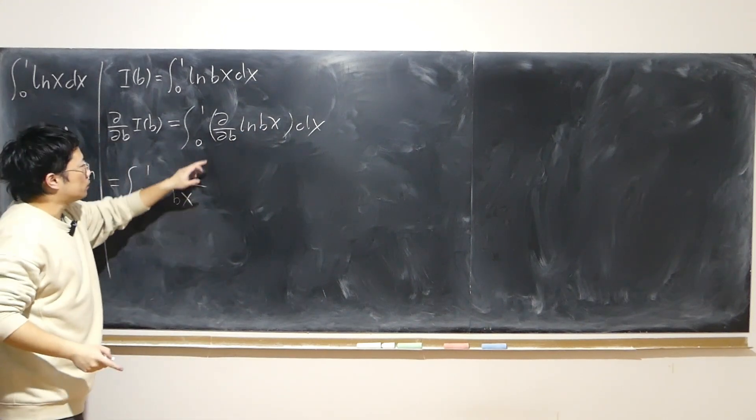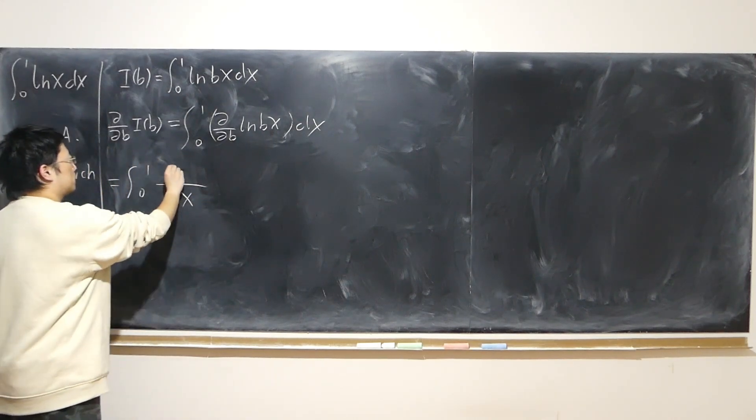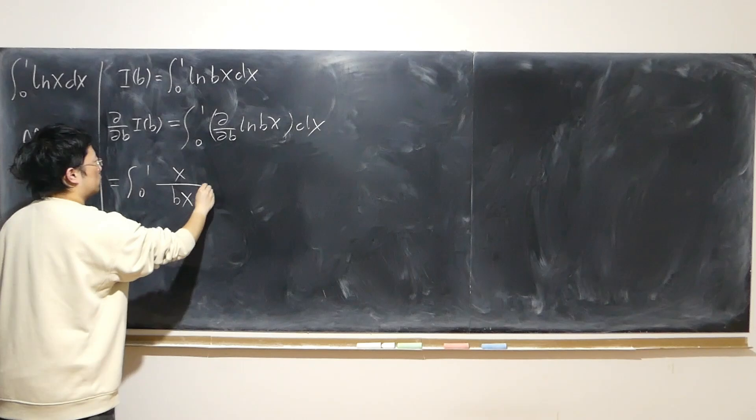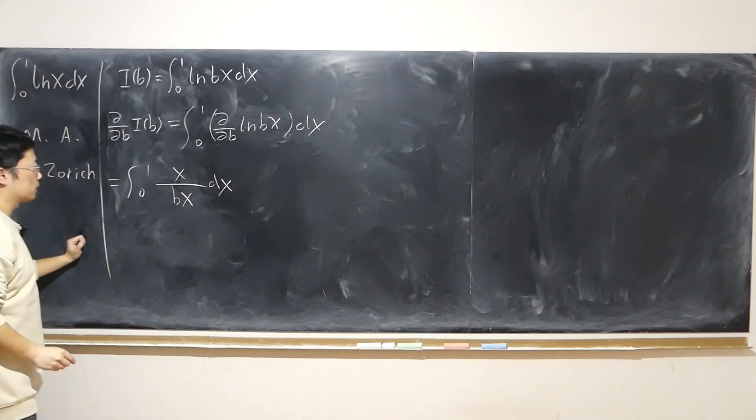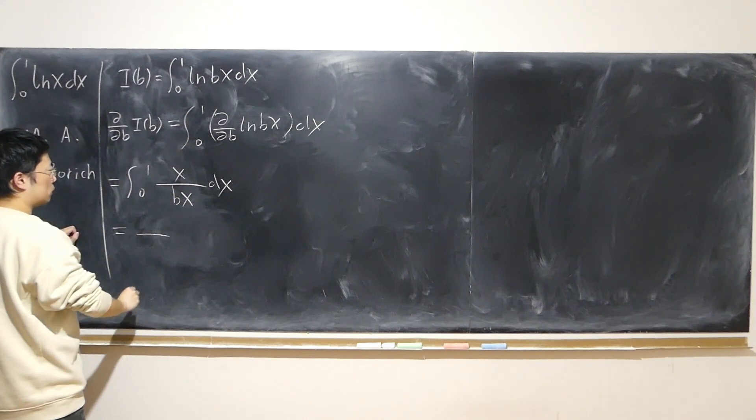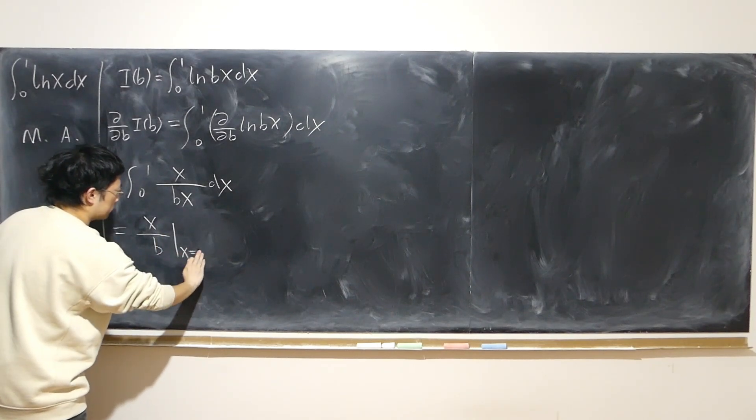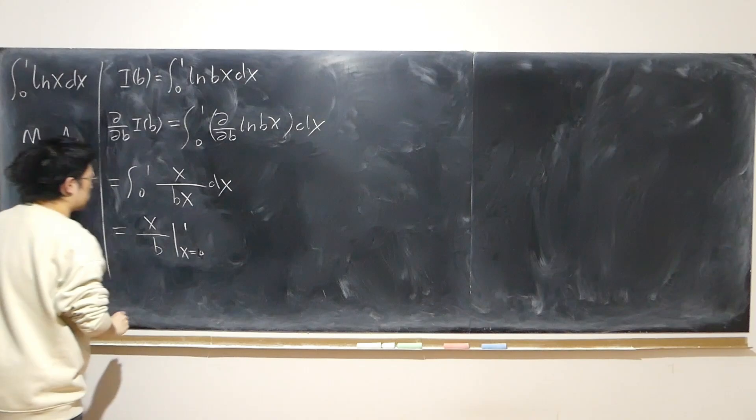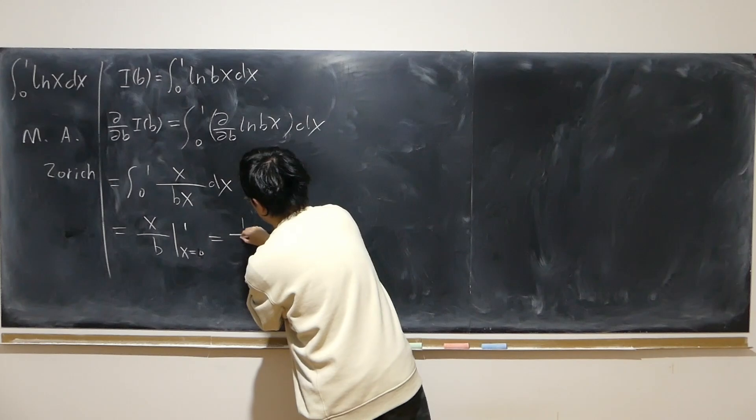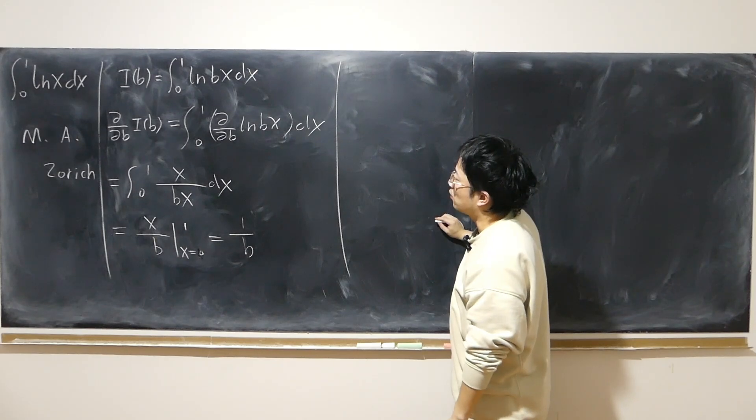We've done the differentiation now. We can do integration. That is simply 1 over b. Antiderivative is just x over b, x from 0 to 1. That is 1 over b. Now our job is just to determine the I(b). Because remember, that's the result of the derivative of I(b).